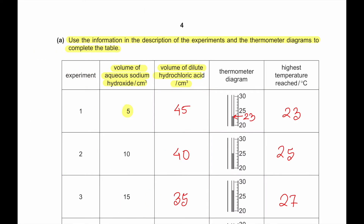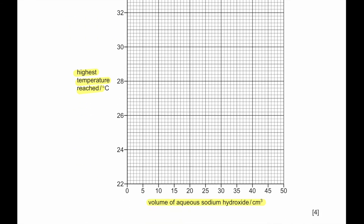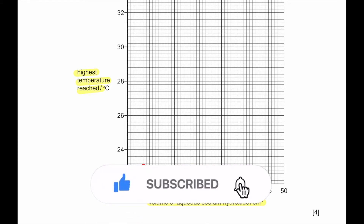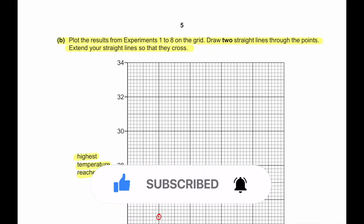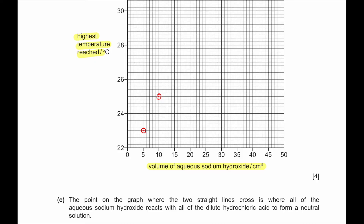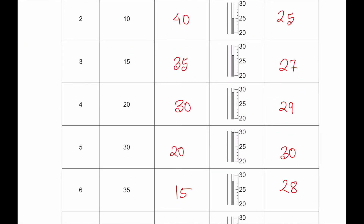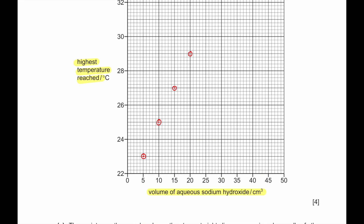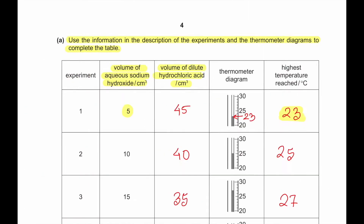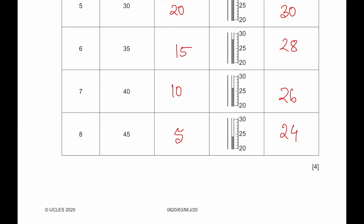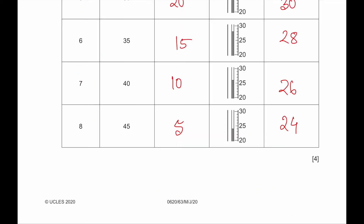From the previous page, the data points to plot are: 5 cm³ NaOH at 23°C, 10 at 25°C, 15 at 27°C, 20 at 29°C, 25 at 30°C. Then for 30 cm³ the value is 30°C, for 35 it is 28°C, for 40 it is 26°C, and for 45 it is 24°C.